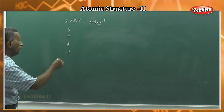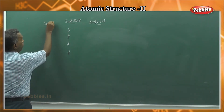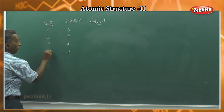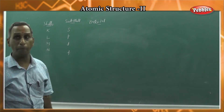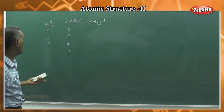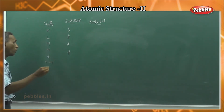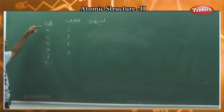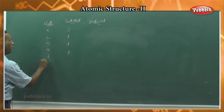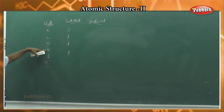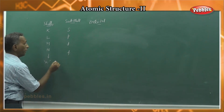Now let's look at shells: K-shell, L-shell, M-shell, N-shell. Shells are written with capital letters. Shells are identified by the principal quantum number denoted as N. N equal to 1 is K-shell, N equal to 2 is L-shell, N equal to 3 is M-shell, N equal to 4 is N-shell.